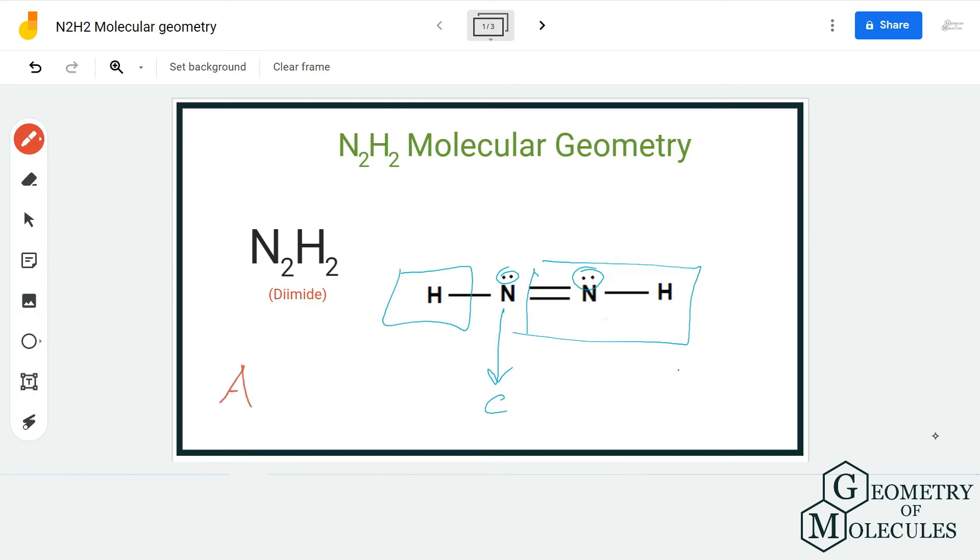So AXE notation for N2H2 would be AX2E1. As mentioned earlier, I am going to use this as one unit and this one as the other one. You can see that the nitrogen atom is forming bonds with two units over here, and hence AX2. And as it has a lone pair, E1. So the notation is AX2E1.